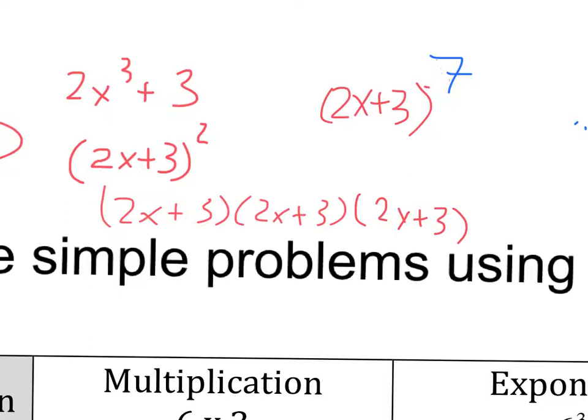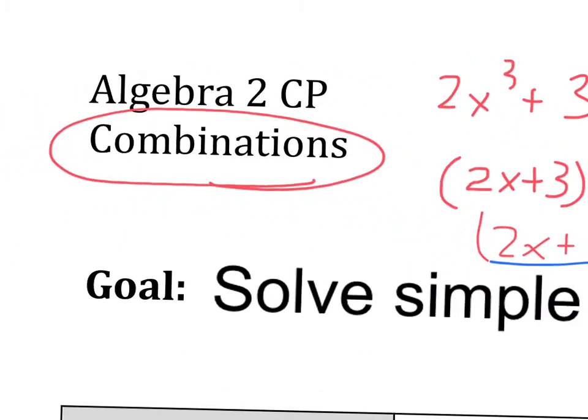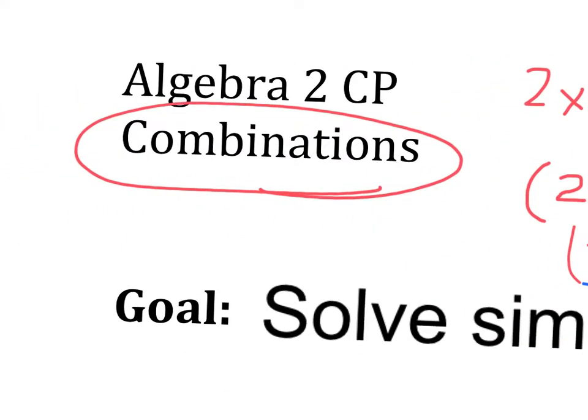Because you would have to write that seven times here, then do the double distribution that many times, and it would probably take you 20 minutes to do one problem. So, as mathematicians, we ask ourselves, is there a quicker and easier way to do this? And the answer is yes. It's called the binomial theorem, but we need to know something about what's called combinations.